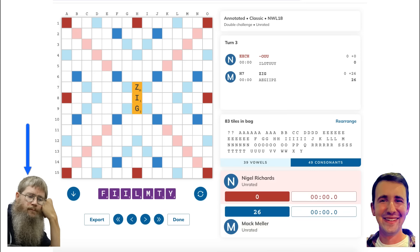After my play of ZIG, Nigel drew F-I-M to his leave of I-L-T-Y, so not exactly what he was hoping for. There are no playable bingos here. He made the very logical play of FILMY for 23 points overlapping with IF and GI, unloading a bunch of his clunky tiles, scoring pretty well, and keeping the nice I-T leave.